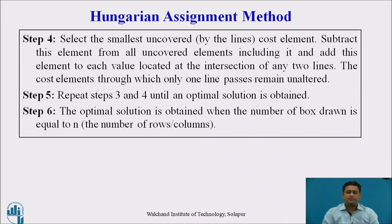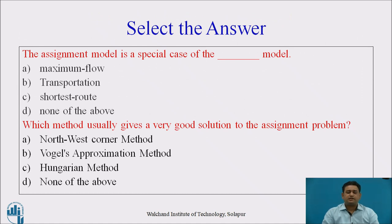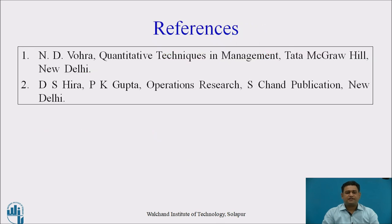Repeat steps three and four until we get the optimal solution. After obtaining the optimal solution, finalize and schedule the assignment of jobs or resources to particular machines or workers. These steps should be followed for solving the assignment problem using the Hungarian Assignment Method. Select the correct answers for the questions. These are the references for today's session. Thank you.